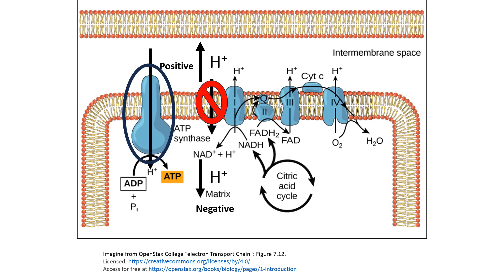As these hydrogen ions move from the intermembrane space through ATP synthase back into the matrix, that causes ATP synthase to rotate. The movement of hydrogen ions through ATP synthase releases energy that allows it to rotate.